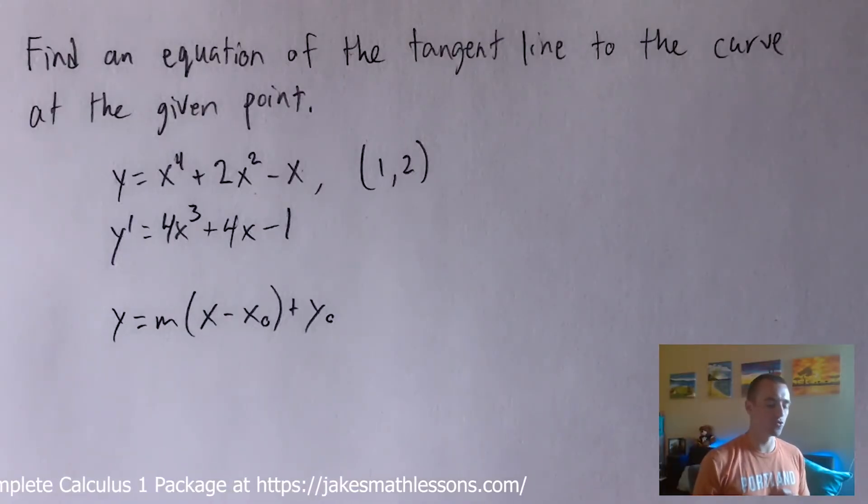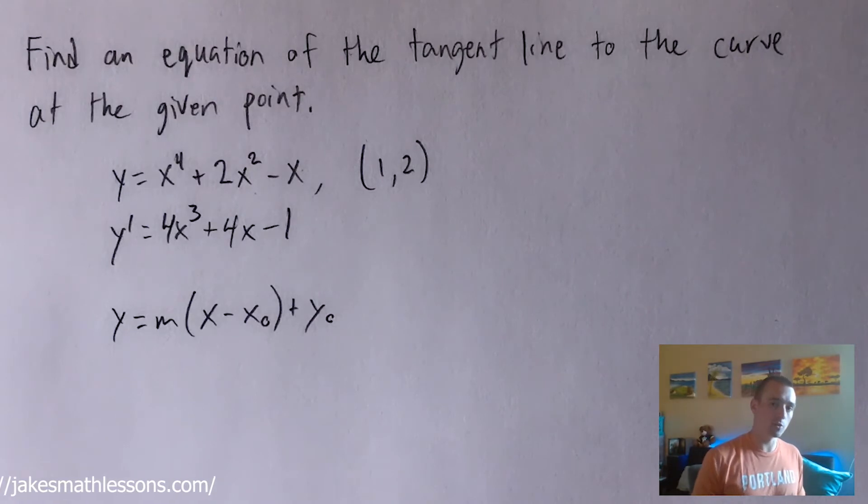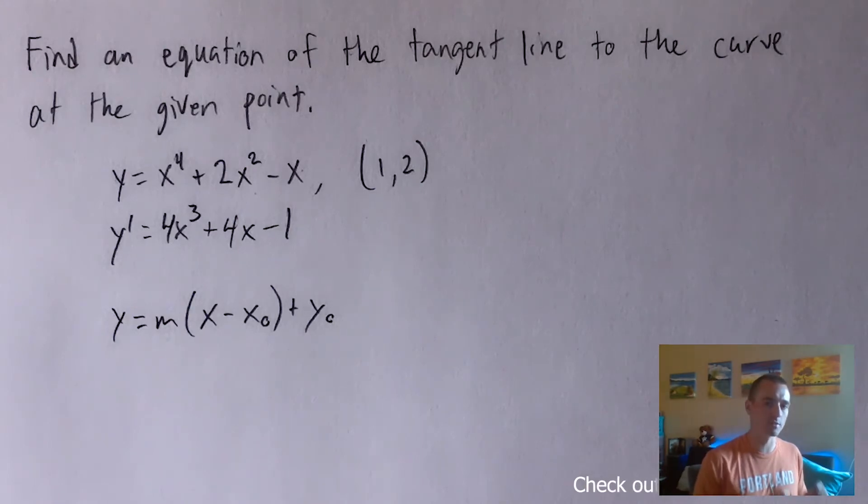So we know that this is the derivative of our function. Well what does the derivative tell you about the original function? It always tells you about the slope. You always want to remember that the derivative of a function always tells you about the original function's slope.